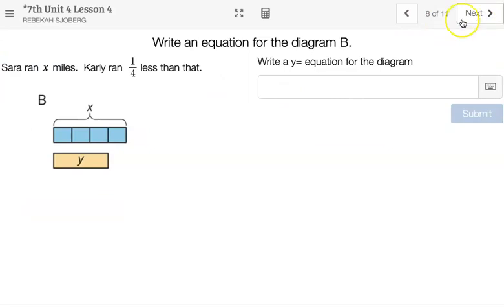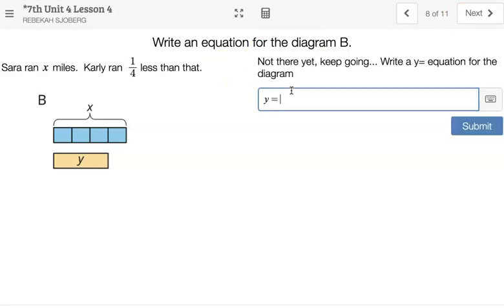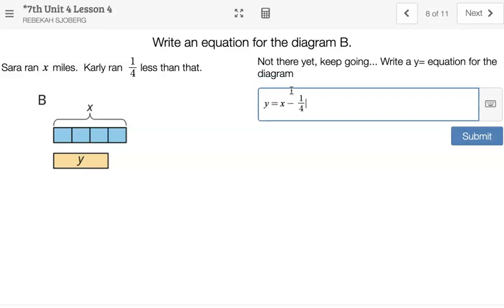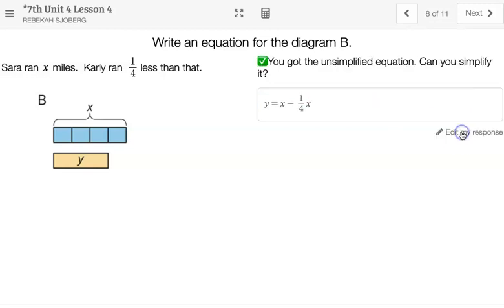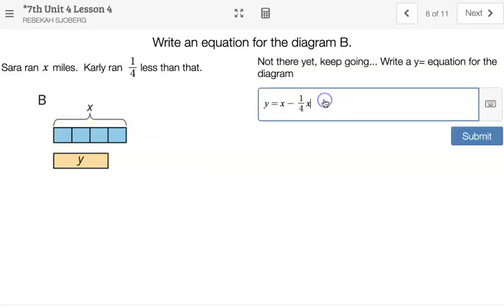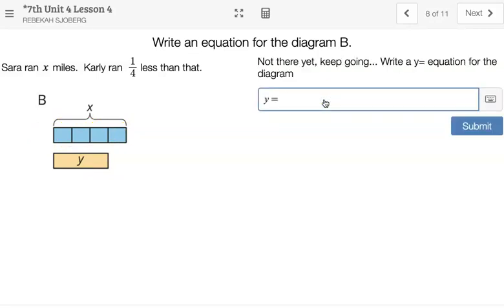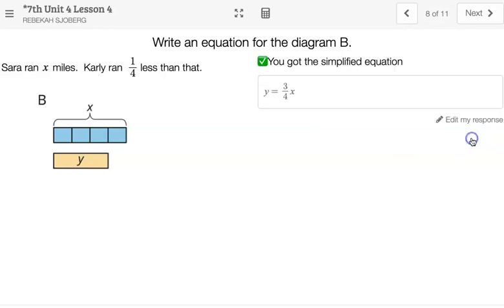All right, Sarah ran X miles and Carly ran 1 fourth less than that. If I wanted to go, I could start out with an unsimplified version. I might say Y equals X, the full X, minus, because it's 1 fourth less, 1 fourth of X. I could submit that and that's the unsimplified. But I'm also going to try to simplify it. So notice I had all of these 4 fourths, the full X, and I took away 1 fourth of them. So I was left with Y equals 3 fourths X. We always start with this one whole, one original, and then go up or down from there.